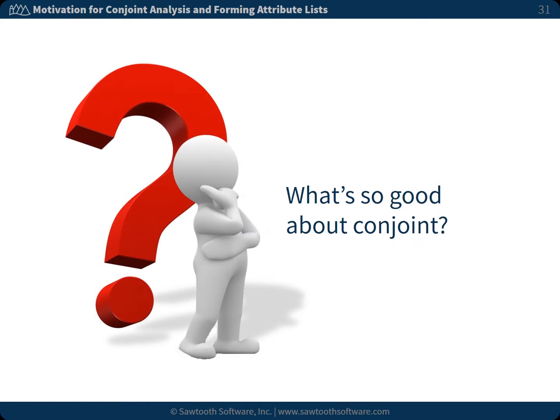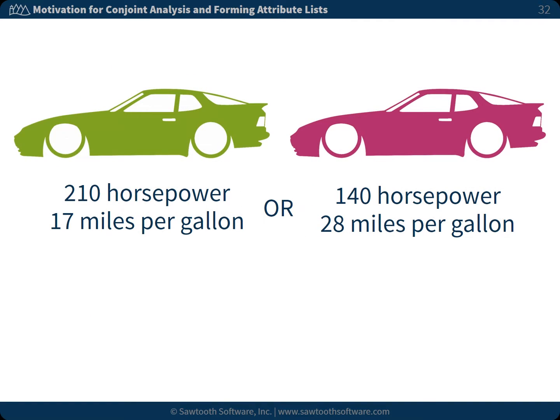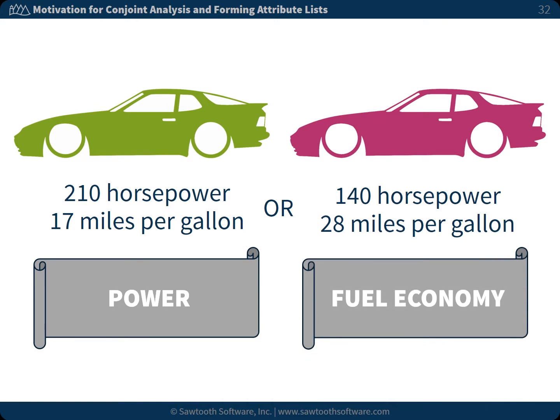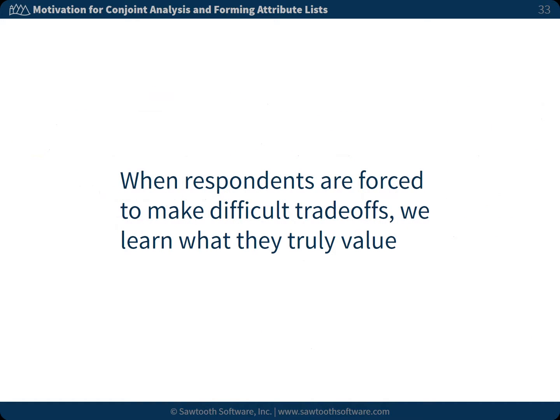So, what's so good about conjoint? Well, you can ask more realistic questions. For example, would you prefer a car that has 210 horsepower and gets 17 miles per gallon, or a car that has 140 horsepower but gets 28 miles to the gallon? If you choose the item on the left, you tend to prefer power. If you choose the one on the right, you tend to prefer fuel economy. Rather than ask directly whether you prefer power over fuel economy, we present realistic trade-off scenarios involving different levels of the two attributes and infer preferences based on your multiple product choices. When respondents are forced to make difficult trade-offs, we learn what they truly value.